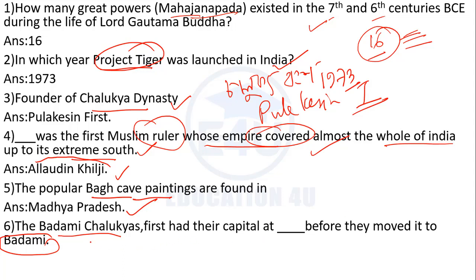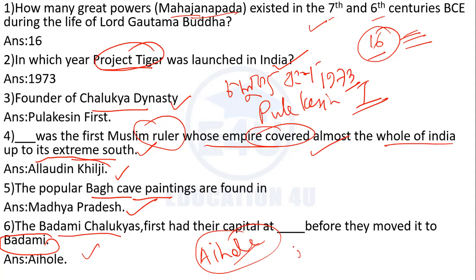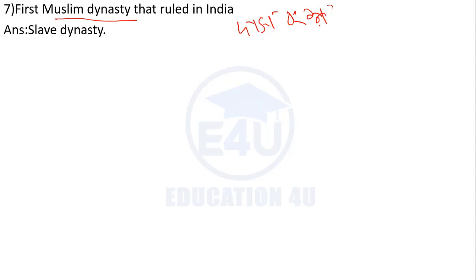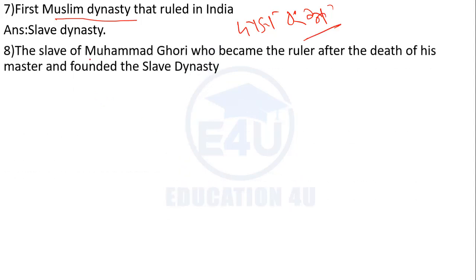The first Muslim dynasty that ruled India was the Slave dynasty. The Slave dynasty — who founded it? Qutb ud-Din Aibak, who was a slave of Muhammad Ghori, became the ruler after the death of his master and founded the Slave dynasty.